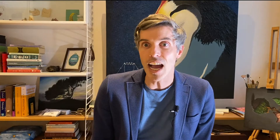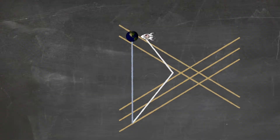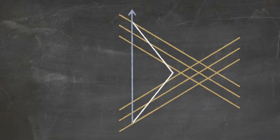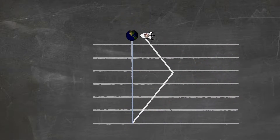If you count how many hypersurfaces of simultaneity have passed, you'll find that because of the tilt, only four years for this observer have passed, whereas for the Earth observer, eight years have passed. The change in the tilting hypersurfaces explains how it is that the traveling twin experiences much less time than the Earth twin.